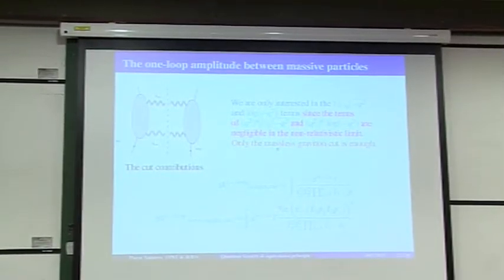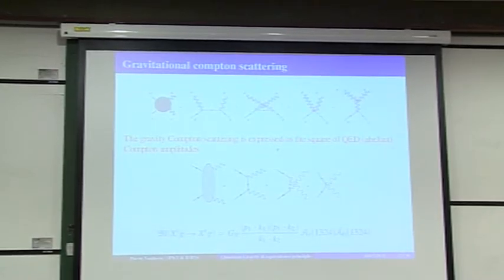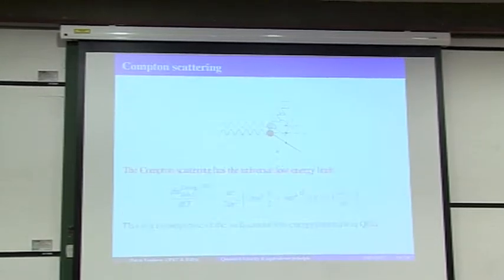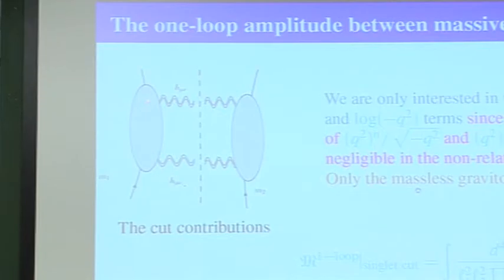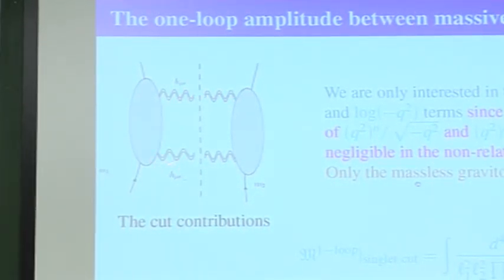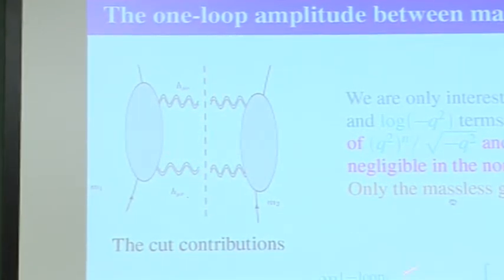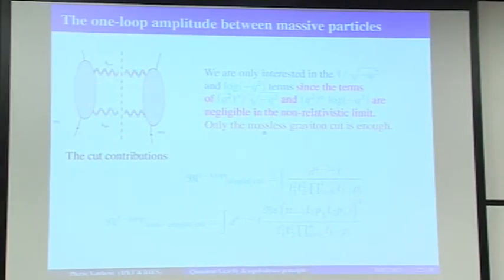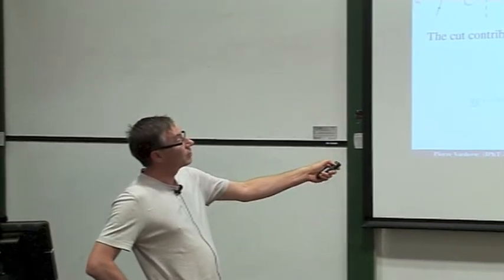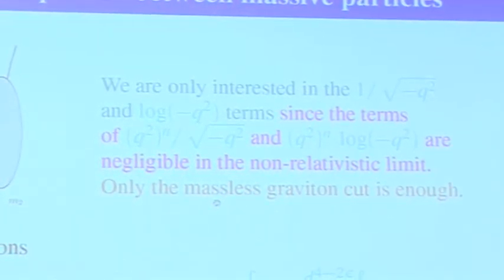Now let me discuss the one-loop amplitude. I want to construct it from the tree-level gravitational Compton amplitude through the unitarity cut method — gluing the amplitude I described, integrating over loop momenta, and summing over the helicity configurations of the gravitons across the cut. The construction is missing some pieces that people in the room know well, but the things I'm missing are not essential for what I'm looking for: for the square-root and log discontinuities I described at the beginning of the talk, this procedure is sufficient.